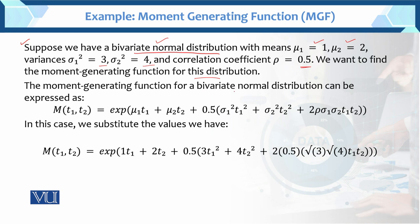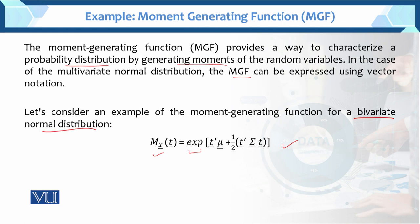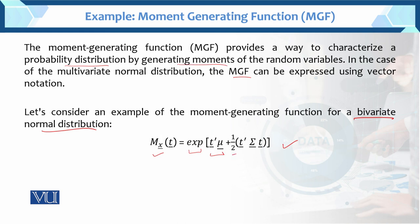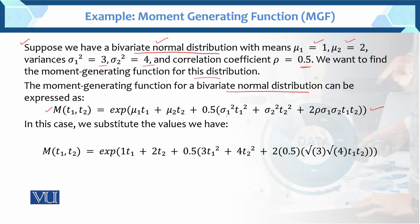The moment generating function for a bivariate normal distribution can be expressed as M(t1, t2). Since we are using the bivariate normal distribution, this is the exponential of μ1·t1 + μ2·t2 — this is the t'μ part — plus half of: σ1²·t1² + σ2²·t2² + 2ρ·σ1·σ2·t1·t2.